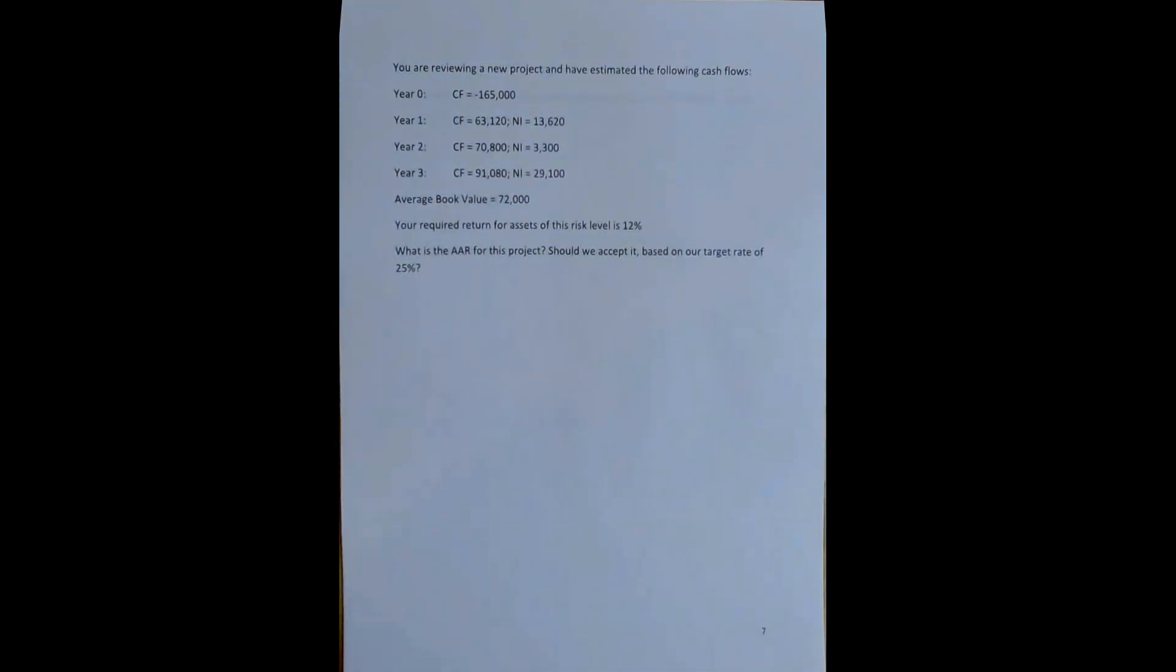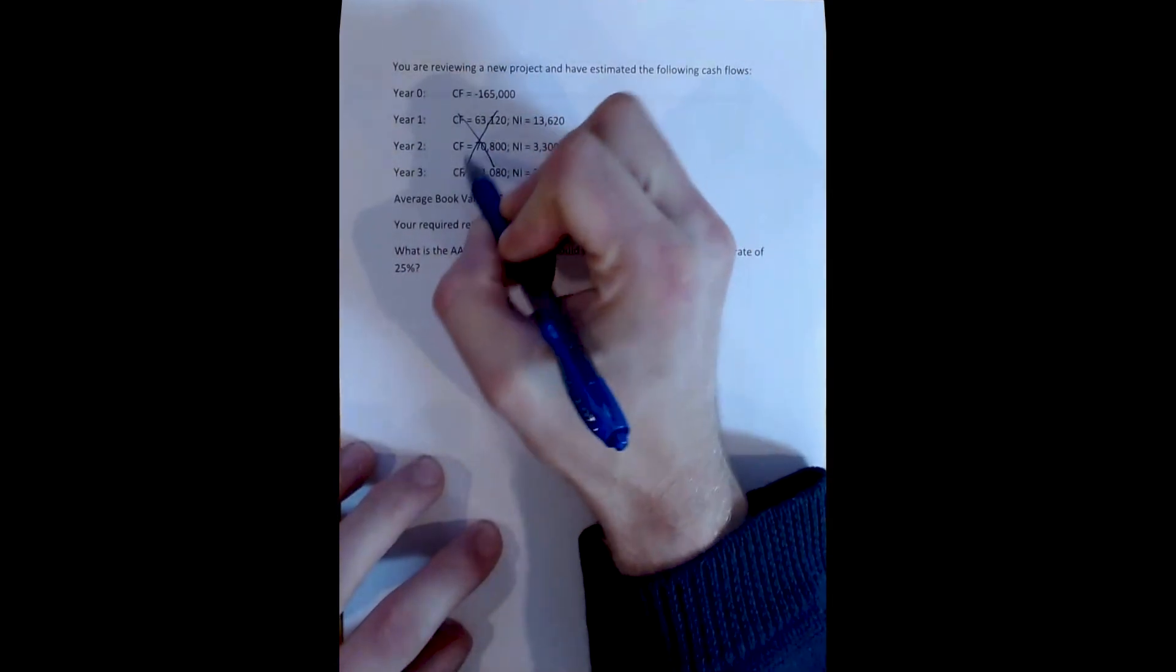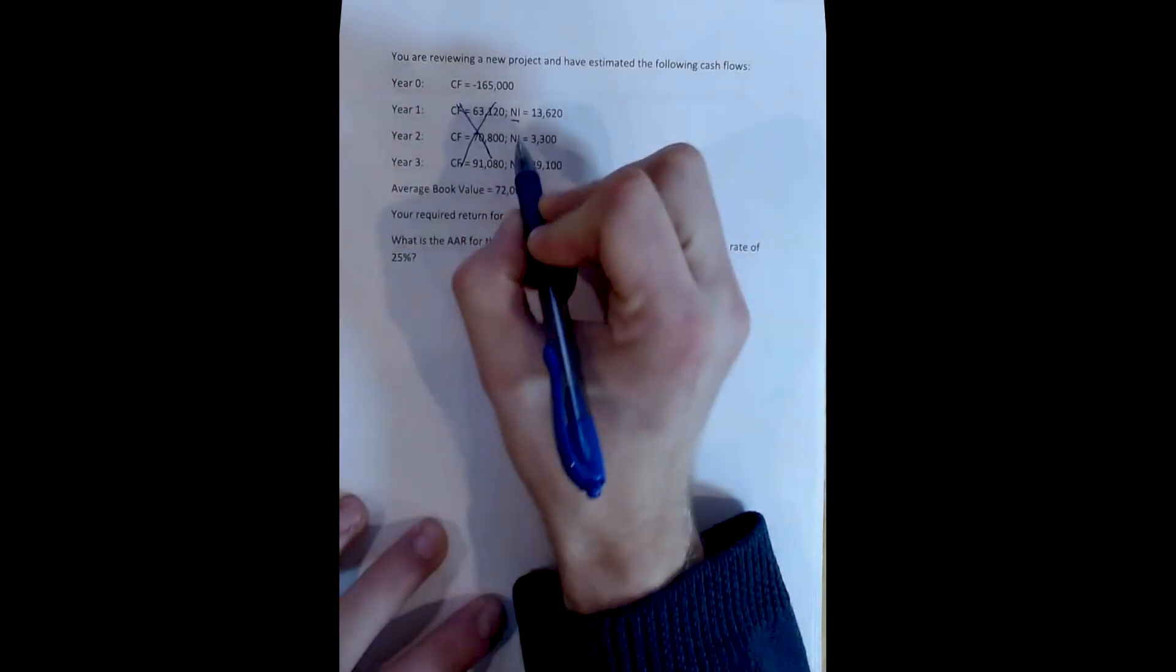The next decision rule that we're going to talk about is called the Average Accounting Return, or the AAR. The Average Accounting Return is slightly different than the other decision rules, specifically because it does away with our operating measure of cash flows, which is the cash flows from assets. Instead, the Average Accounting Return uses an accounting measure of profit, which is net income.